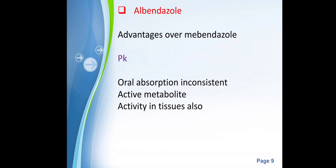The second drug is albendazole, which is equally or even more commonly used than mebendazole to treat parasitic infestations. It has certain advantages over mebendazole. The most important advantage is that in most conditions only a single dose is required — the adult dose is 400 mg, and a single 400 mg dose is sufficient for most common conditions, making compliance much easier.